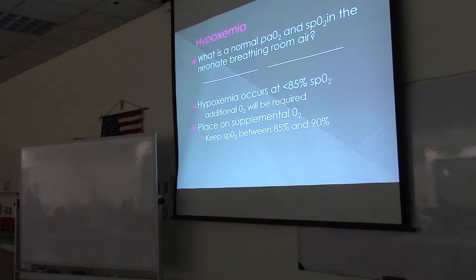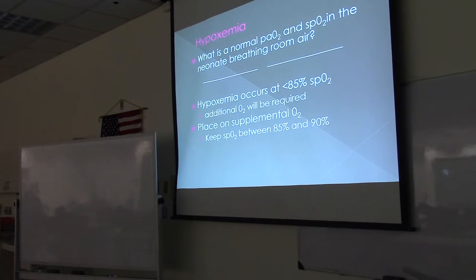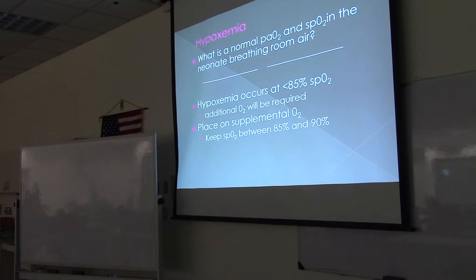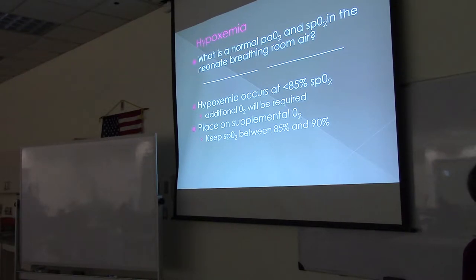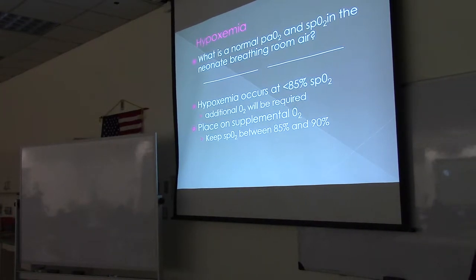Hypoxemia occurs at less than 85% SpO2, and at that point you'll want to give supplemental oxygen to the neonate. If you already have them on oxygen, keep the saturation between 85 and 90% — but that's for infants less than 34 weeks. For infants greater than 34 weeks, the target is 88 to 95%.